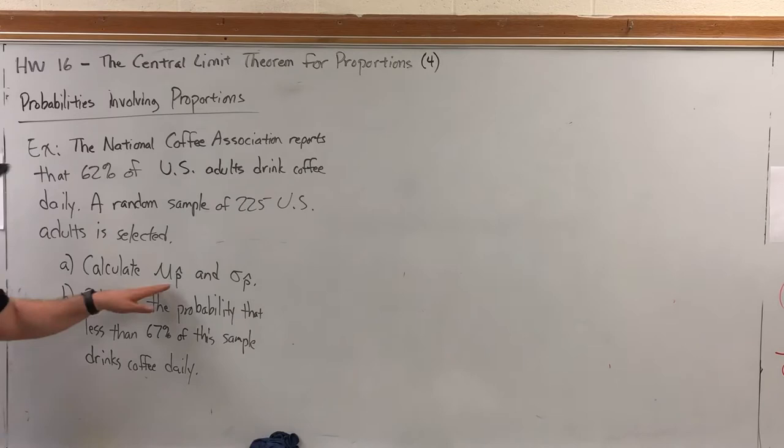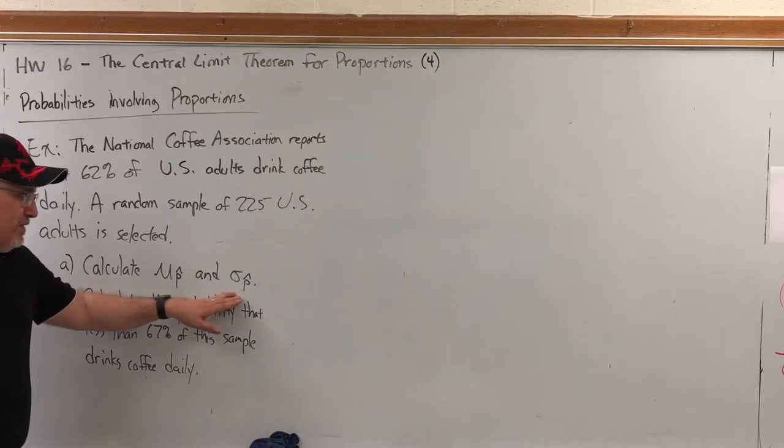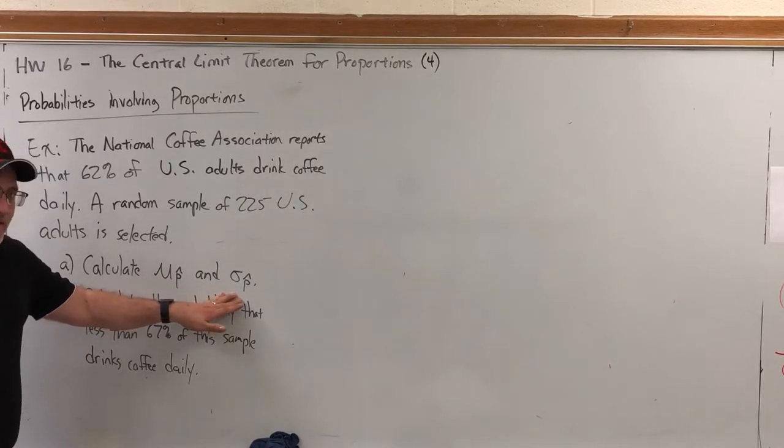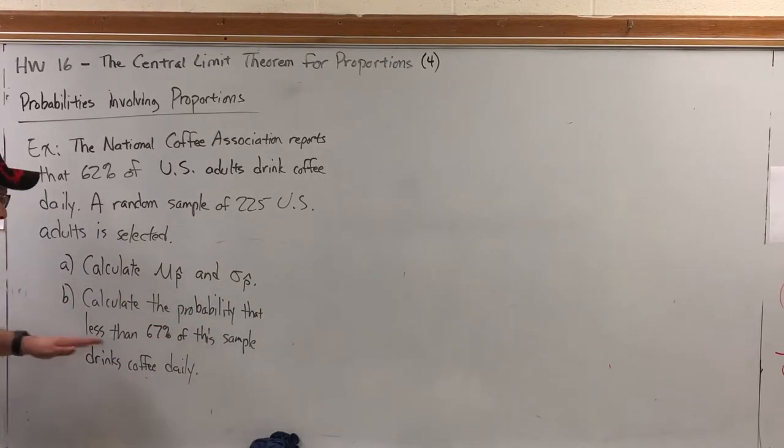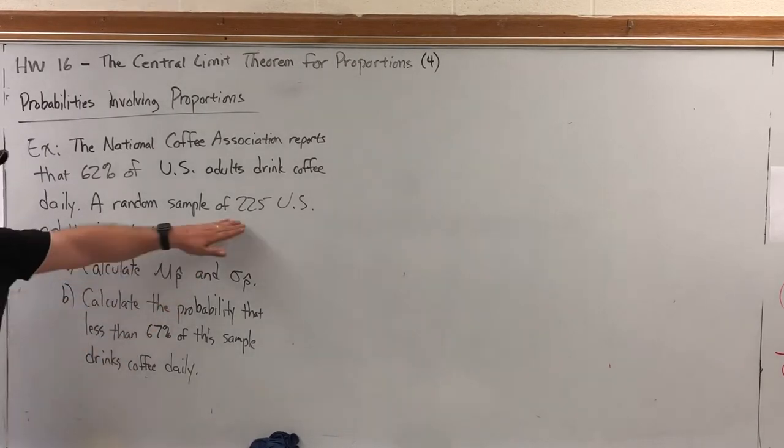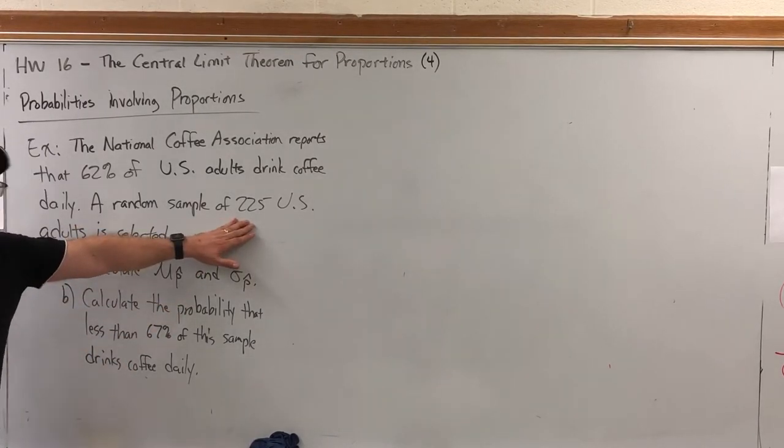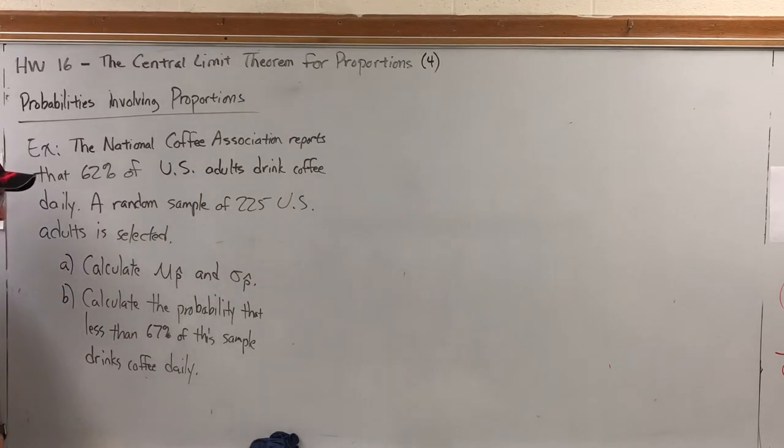Part A: Calculate the μ of P-hat and σ of P-hat, pretty easy once we know P and n. Part B: Calculate the probability that less than 67% of the sample drinks coffee daily. So we take 225 people and ask them, do you drink coffee? We're going to know the probability that less than 67% of them say yes.